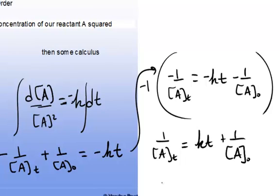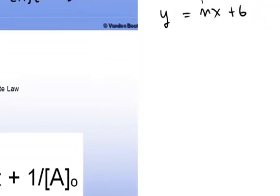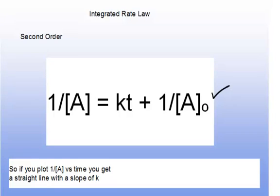This equation is now in y = mx + b format. The y-intercept is 1/[A]₀, and the slope is k. We should have a straight line when we plot 1 over the concentration versus time.